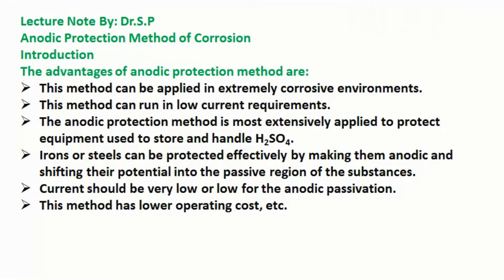The advantages of anodic protection method are: this method can be applied in extremely corrosive environments, and it can run with low current requirements. The anodic protection method is most extensively applied to protect equipment used to store and handle sulfuric acid H2SO4. Irons or steels can be protected effectively by making them anodic and shifting their potential into the passive region. Current should be very low for anodic passivation. This method has lower operating cost.